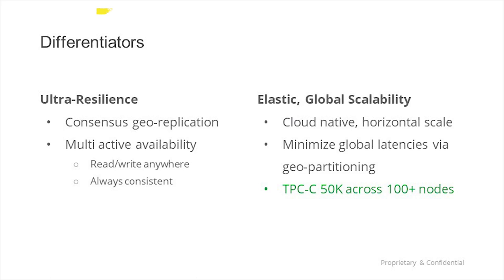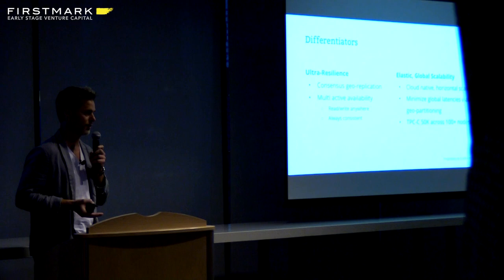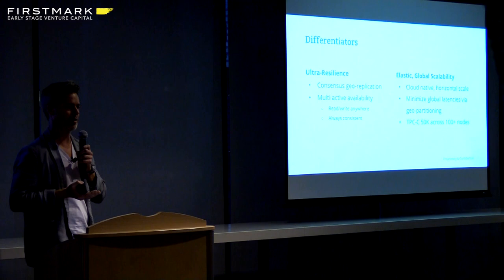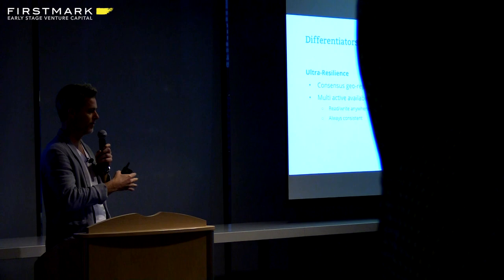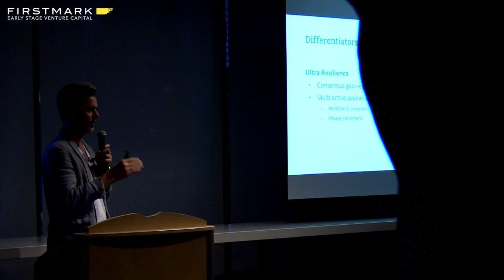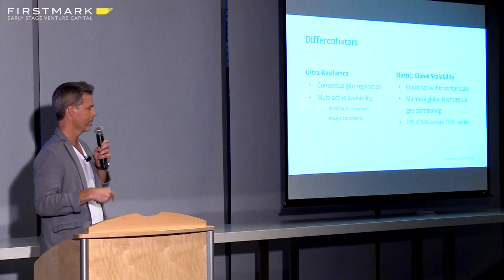The first big differentiator is ultra-resilience. We put 'ultra' in front to distinguish it from the kind of resilience people know from Oracle Golden Gate, which is asynchronous. CockroachDB uses synchronous replication — specifically consensus replication — and the idea of multi-active availability. Unlike active-passive or active-active, you have three or more replicas, all active. You can read and write anywhere and always get a consistent answer. The trade-off is latency.